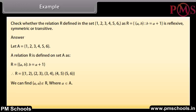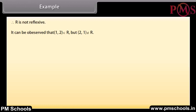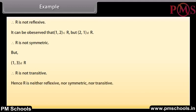We can find that (a, a) does not belong to R where a belongs to A. For instance, (1,1), (2,2), (3,3), (4,4), (5,5), (6,6) do not belong to R. Therefore, R is not reflexive. It can be observed that (1,2) belongs to R but (2,1) does not belong to R. Therefore, R is not symmetric. Also, (1,3) does not belong to R. Therefore, R is not transitive. Hence, R is neither reflexive nor symmetric nor transitive.